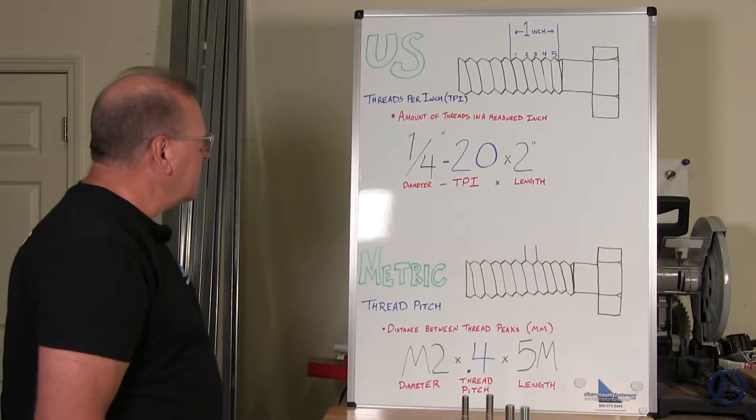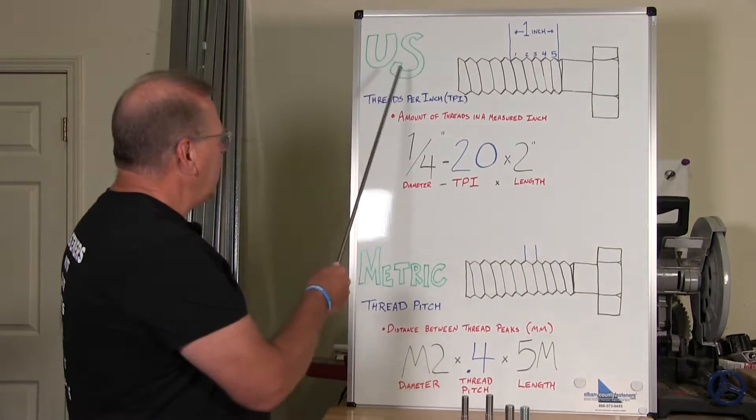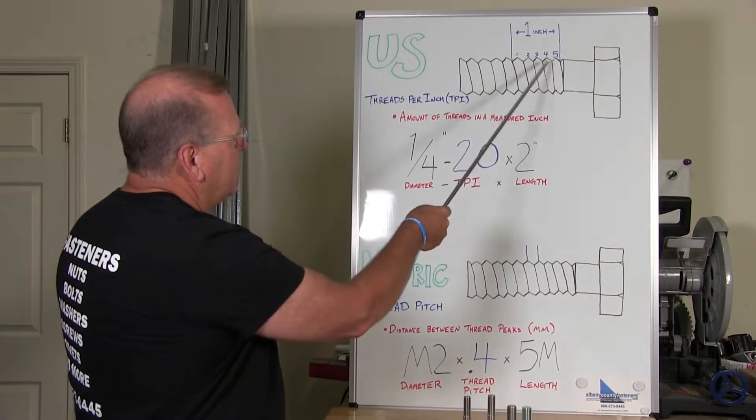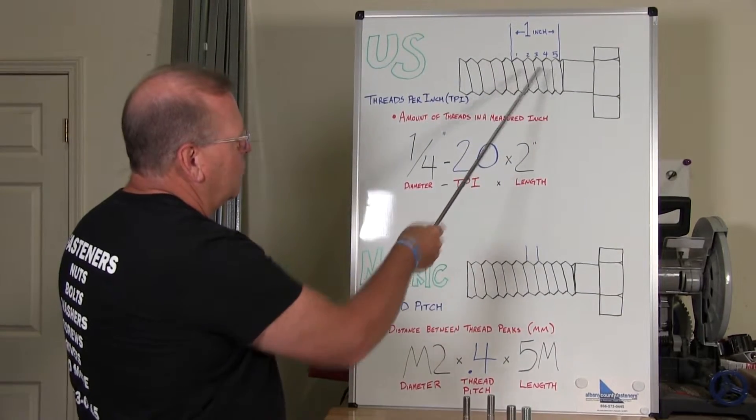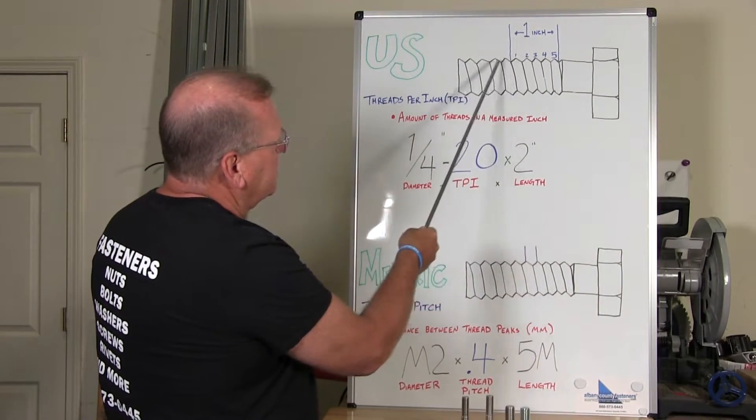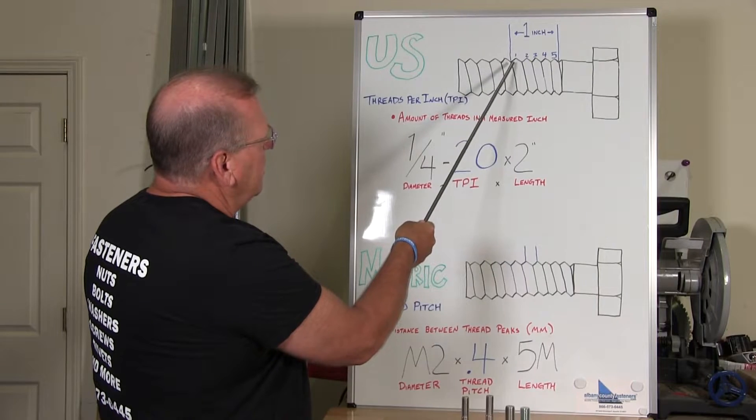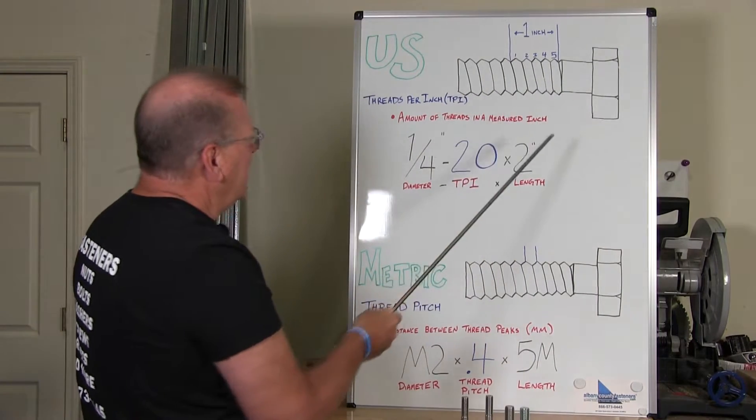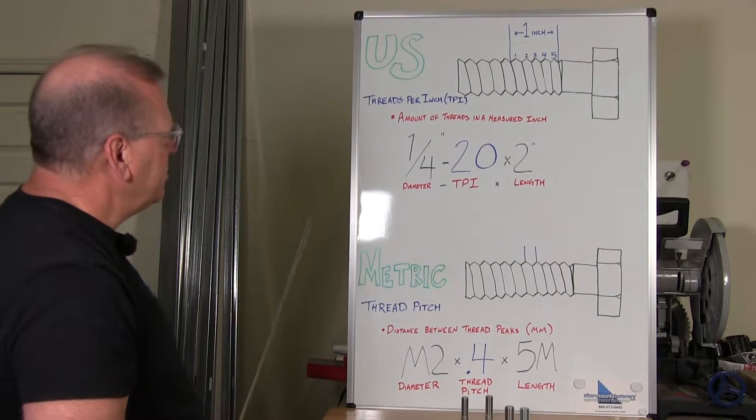Basically what you have with US threads per inch is how many threads are actually in one inch of the thread area. So when you measure one inch like in this case here you will see one, two, three, four, five in that one inch.